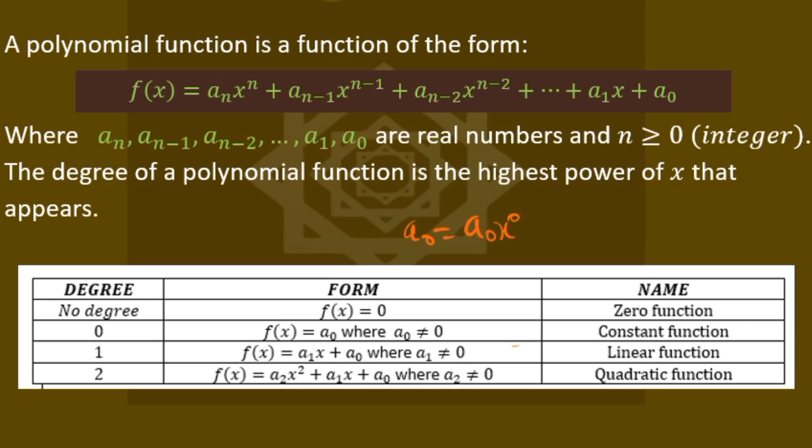The third row shows the highest degree is one, so the degree is one — that's the linear function. The second row is quadratic with power two, so the degree is two. These are the names: zero function for the constant that is zero, constant function for any other constant, then linear function, and finally the quadratic function.